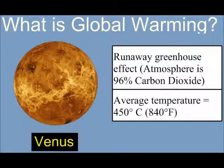Other planets, like Venus, are made up of about 96% carbon dioxide, and they have what's called a runaway greenhouse effect. The average temperature on Venus is about 450 degrees Celsius, or 840 degrees Fahrenheit.